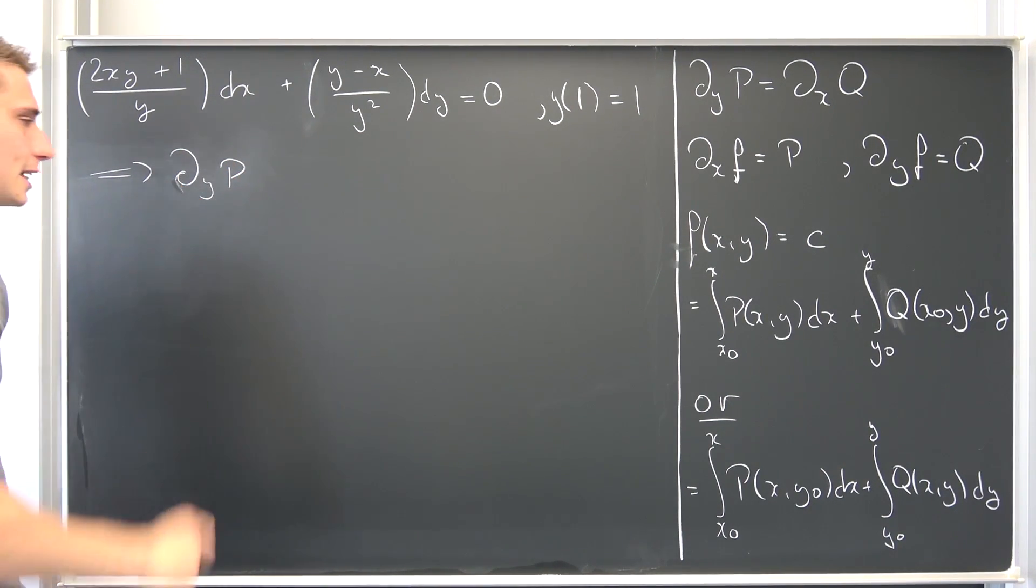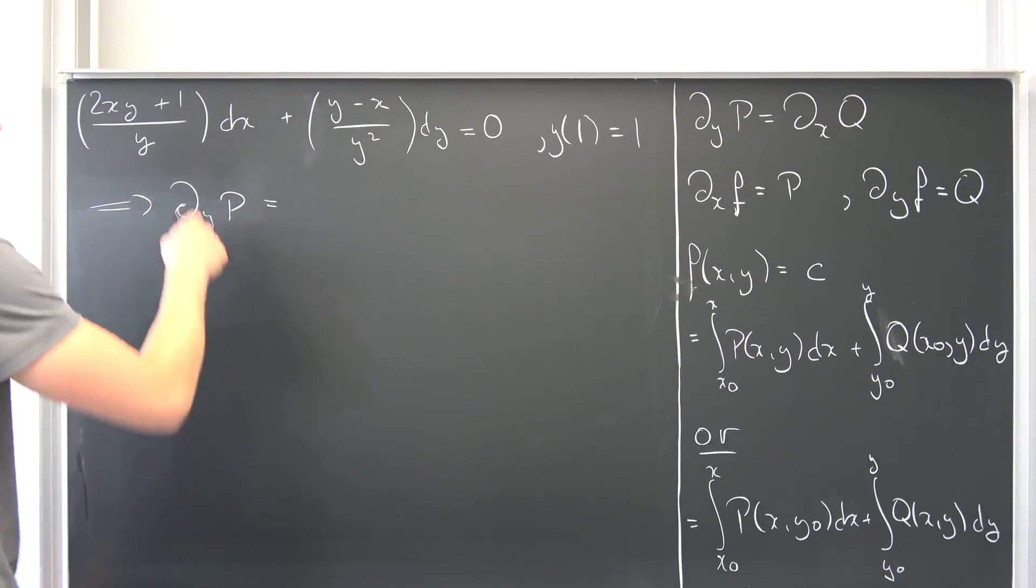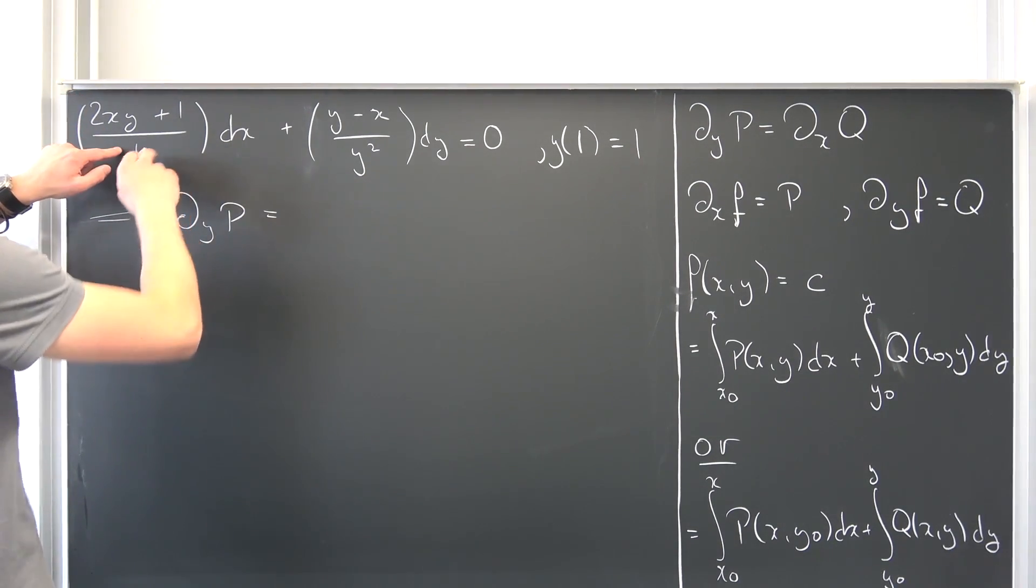Now let us take a look at ∂P/∂y. P is always the coefficient of our differential in dx, meaning we are going to differentiate this thing with respect to y. What are we going to get? Maybe we should split it up. This is the ∂y of.